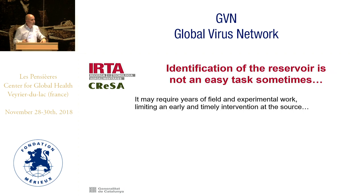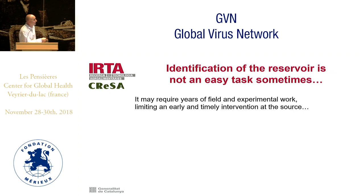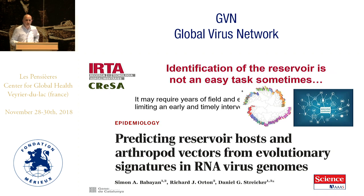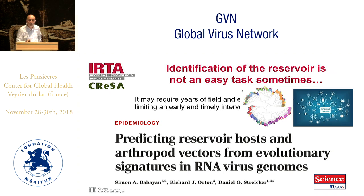In some cases it may require years of field and experimental work to establish the reservoir, and if it takes a long time this severely limits the possibility of effective intervention. There is a very interesting work published this year by Yavan and colleagues claiming that they can predict the reservoir host, including some arthropod vectors, based on evolutionary signatures in RNA virus genomes. They used phylogeny as well as machine learning — artificial intelligence — to establish algorithms able to predict a priori the potential reservoir of a particular detected virus.